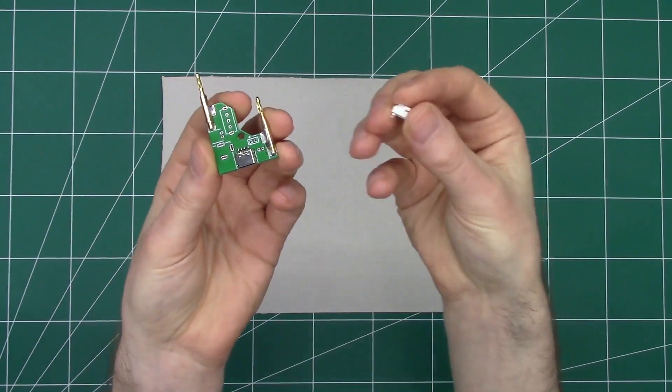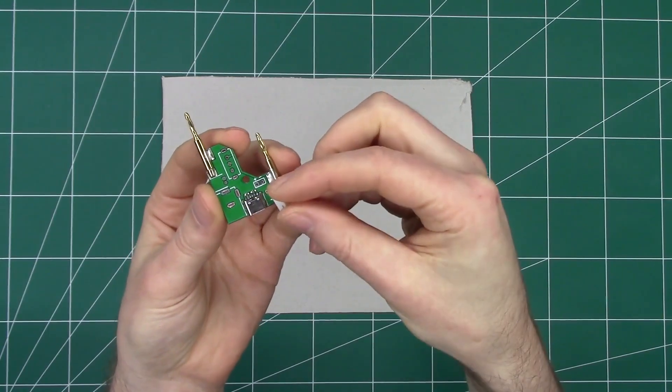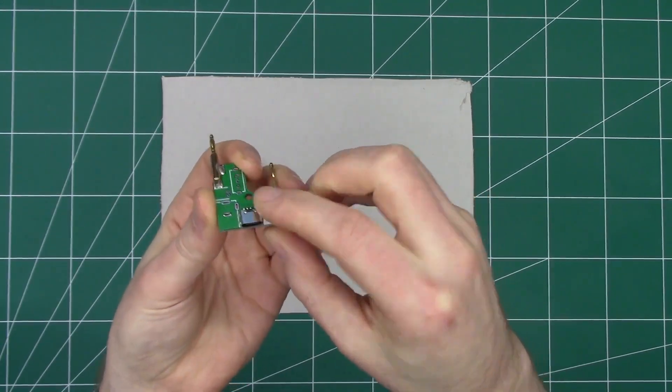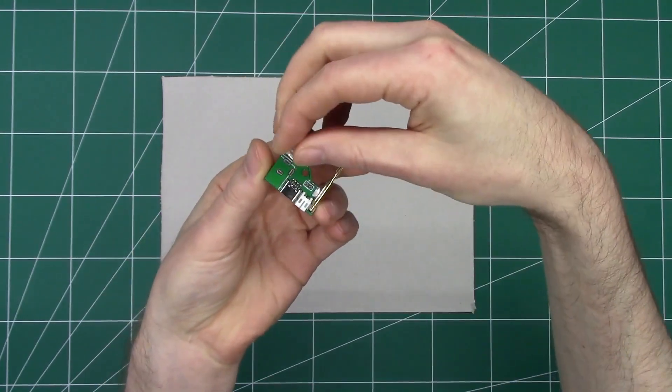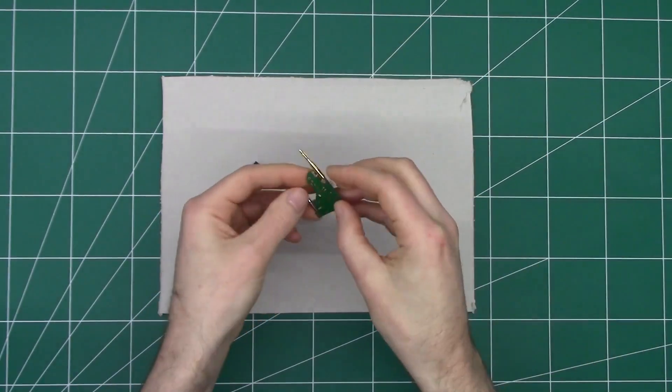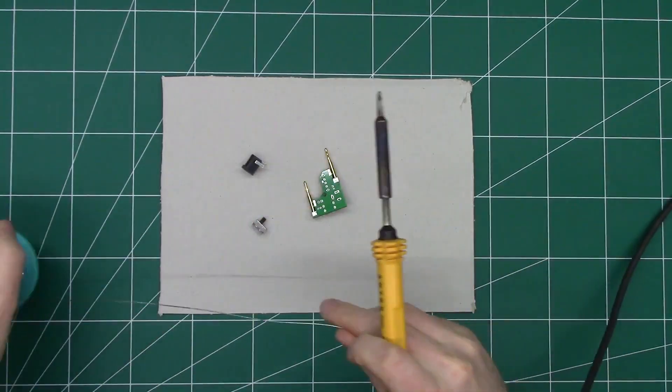The first step is to solder the JST battery connectors. Both of those can be plugged in at the same time—the vertical and the horizontal. Then flip that over. You just need a standard soldering iron and some solder.